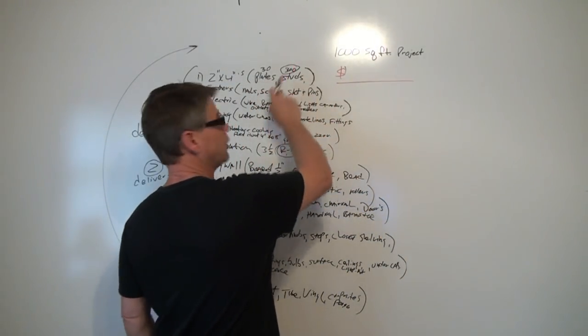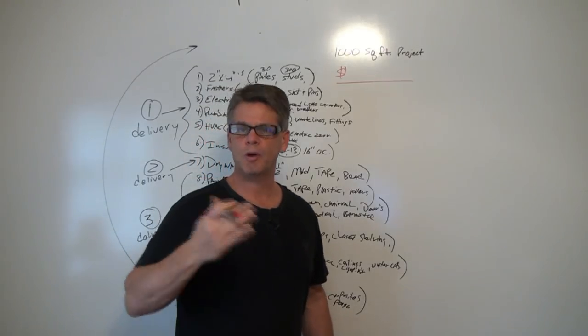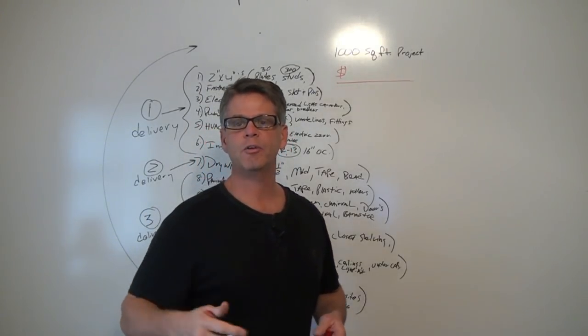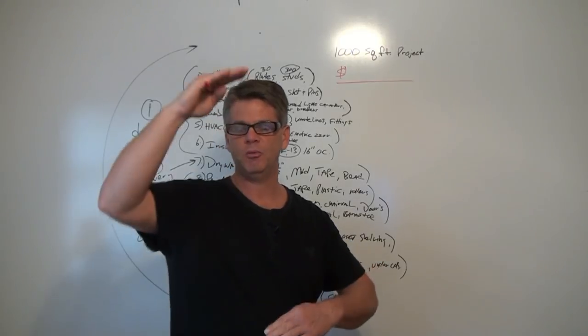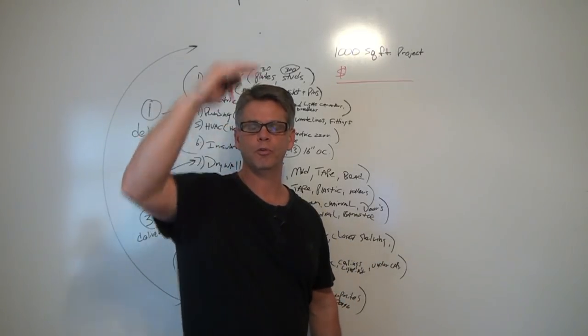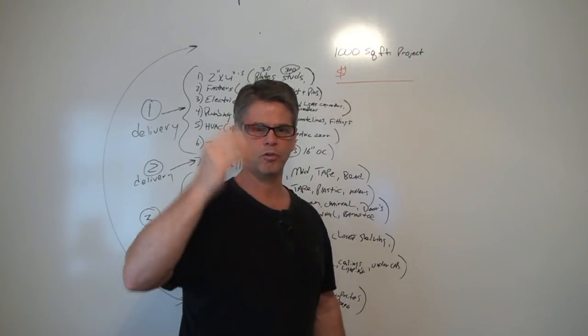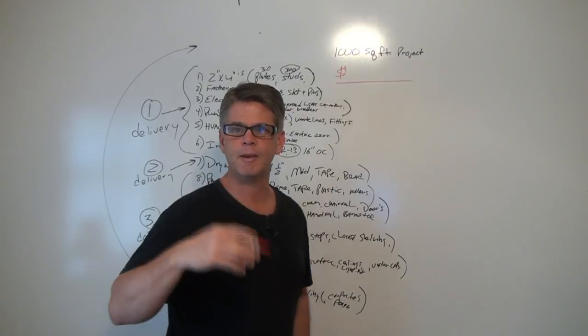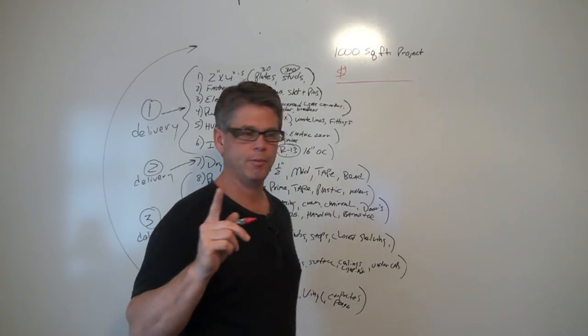We're going to start with the 2x4s. I figured 300 studs, 2x4s in the walls. And they're either going to be 8 foot or 9 foot, depending upon the height of my client's basement, from the concrete floor to the floor joist. So you'll measure from your floor to your joist and wherever you fall, you'll order that length of lumber.